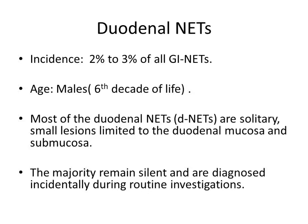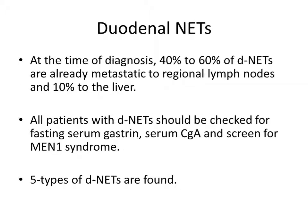The incidence of duodenal NETs is in the range of 2 to 3% of all GI NETs. Duodenal NETs occur in the 6th decade of life, preferably in males. Most duodenal NETs are solitary and small, limited to the duodenal mucosa and submucosa. The majority remain silent and are diagnosed incidentally during routine investigation. At the time of diagnosis, 40 to 60% of DNETs are already metastatic to regional lymph nodes and 10% to the liver.